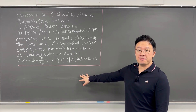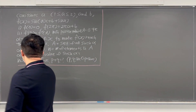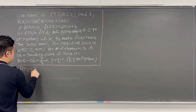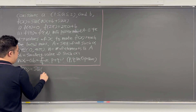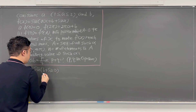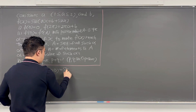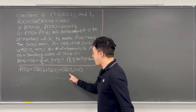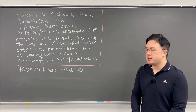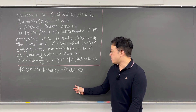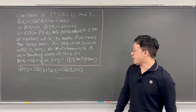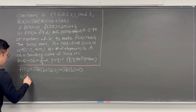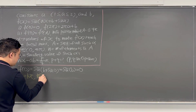Let's look at the first condition: f(0) = 0. Plugging x = 0 into f(x) gives sine(b) + sine(0) = sine(b) = 0. So b must be an angle that makes sine equal to 0 — that is, b = kπ where k is an integer.